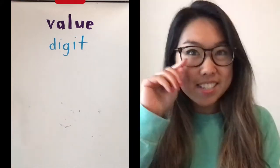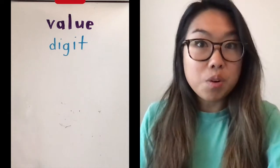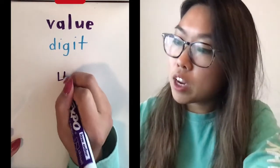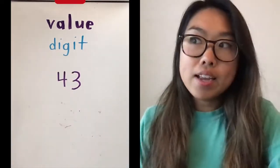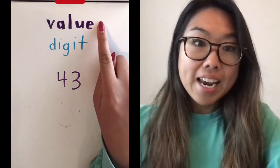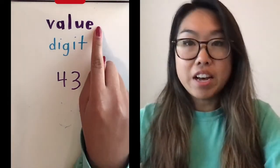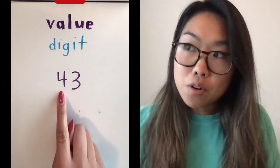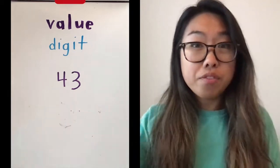When we think about numbers, we can think about them in different ways. For example, if I have the number 43, I can think two different things — I can think about the value and I can think about the digit. When I think about value, I'm thinking: what's it worth? So I know this four is in the tens place, so it's actually worth four tens.